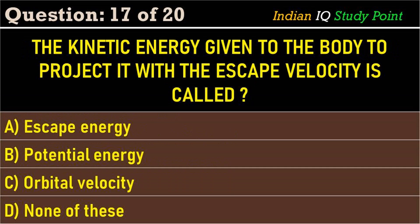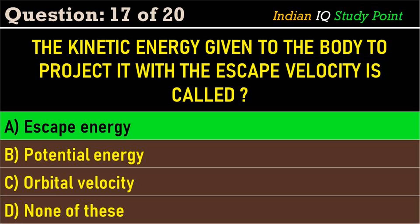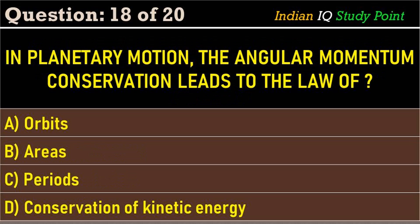Coming to the next question: the kinetic energy given to a body to project it with the escape velocity is called — option A: escape energy. Option B: potential energy. Option C: orbital energy. Option D: none of the above. The correct answer is option A: escape energy.